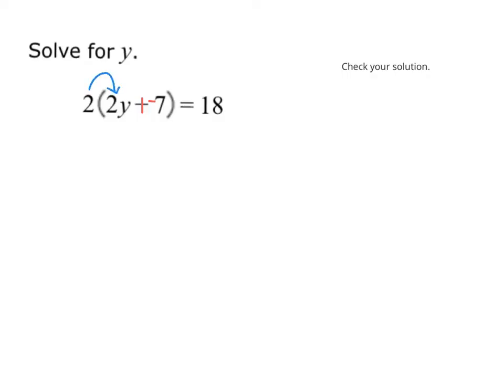Okay, so I'm doing 2 times 2y, and that is 4y. And then, since I turn that into addition, I can bring down a plus sign. And then I have 2 times a negative 7. And 2 times negative 7 is negative 14. And I can set that equal still to 18. So, from here, I have 4y plus negative 14 equals 18.